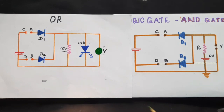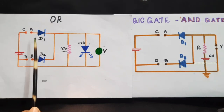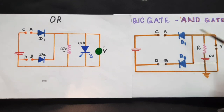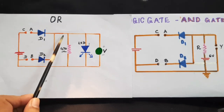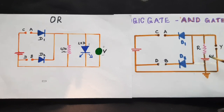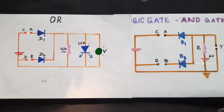Let us observe the main differences between the OR gate and AND gate circuit. The first difference is that while the diodes have their positive terminal on the left-hand side in an OR gate, here in the AND gate the diodes have the positive terminal on the right-hand side — so they are kept in the opposite orientation. The next difference is that the 470 ohm in the OR gate starts from the common point and ends at earth, whereas here the 470 ohm starts from the common point and ends at the positive terminal of the battery. The negative terminal of the battery is already connected to ground.